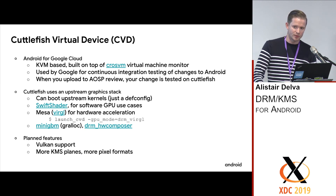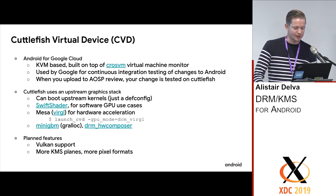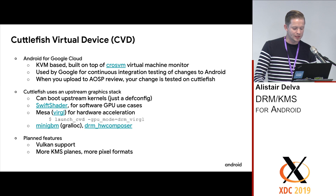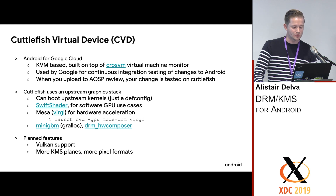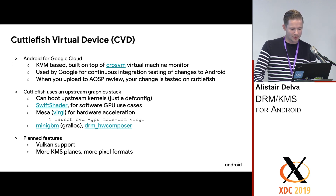Things we don't have right now: we don't have Vulkan support, because Mesa's upstream virtual backend doesn't support it yet. We are working on an alternative solution. We're also interested in adding support for more KMS planes and more pixel formats. At the moment, Hardware Composer on our virtual platform runs single-plane, so all the composition Android does is through OpenGL ES. We would really like to make the virtual platform look more like a real physical platform, with the ability to program framebuffers to different KMS overlays, and to add support for different pixel formats, video stacks, cameras, and more.